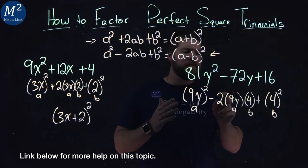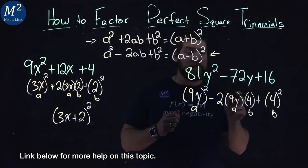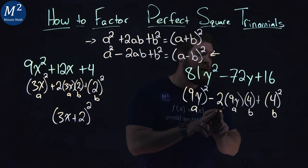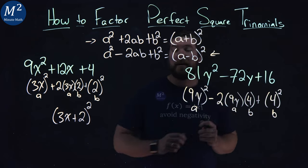So does 2 times 9 times 4 equal 72? Well, 2 times 9 is 18 times 4, which does equal 72 with a negative sign. So 72y does equal 2(9y)(4).